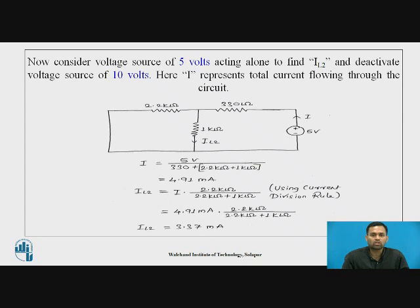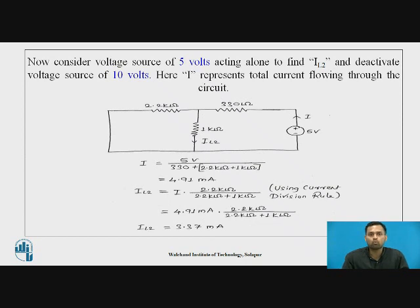First, we find the total current I using I = V/R, where V is the total voltage and R is the total resistance. Total resistance is 330 Ω in series with the parallel combination of 2.2 kΩ and 1 kΩ. Total current I in this case is 4.91 mA.